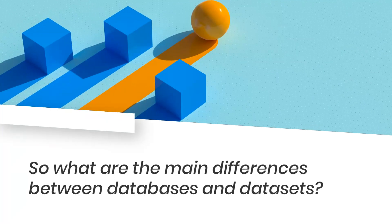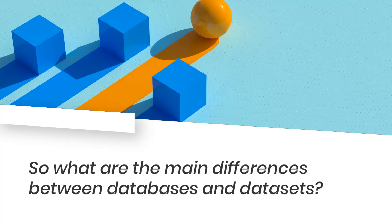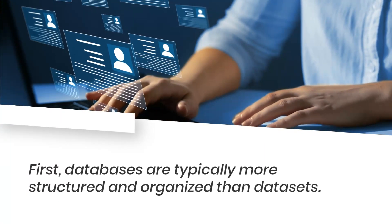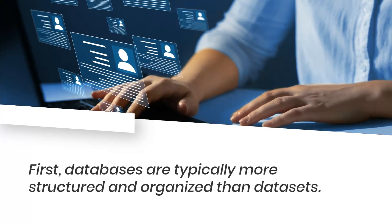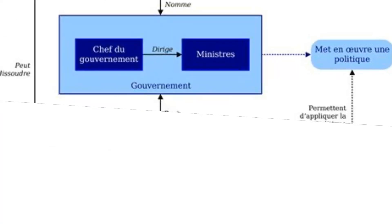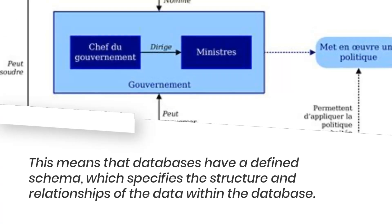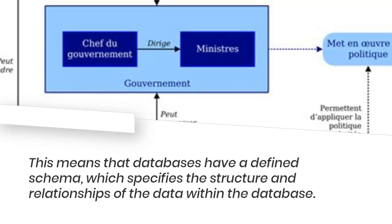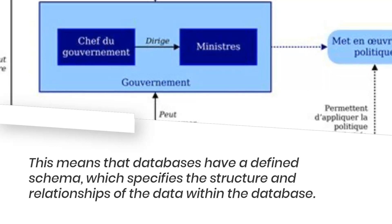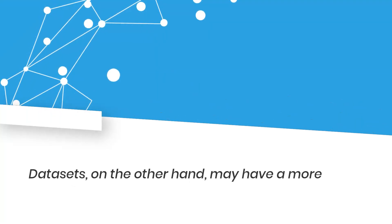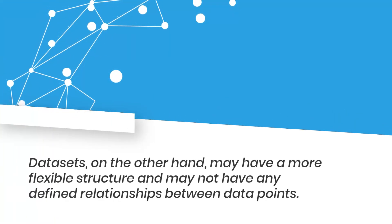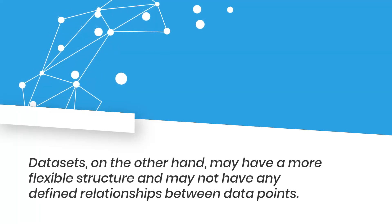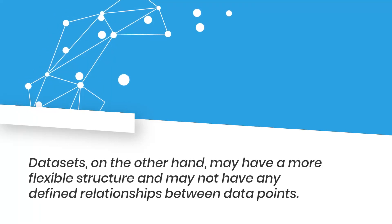So what are the main differences between databases and datasets? First, databases are typically more structured and organized than datasets. This means that databases have a defined schema, which specifies the structure and relationships of the data within the database. Datasets, on the other hand, may have a more flexible structure and may not have any defined relationships between data points.